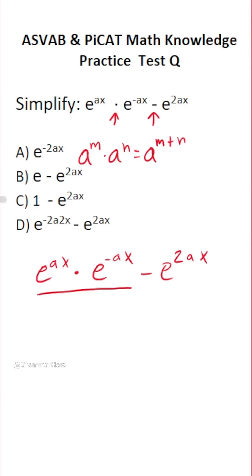And in this case right here, we have e to the ax times e to the negative ax. According to the product rule, this is going to become e to the ax plus negative ax. This is the same thing as ax minus ax, which is zero. So this is e to the zero.